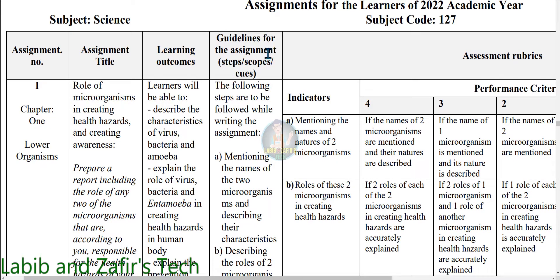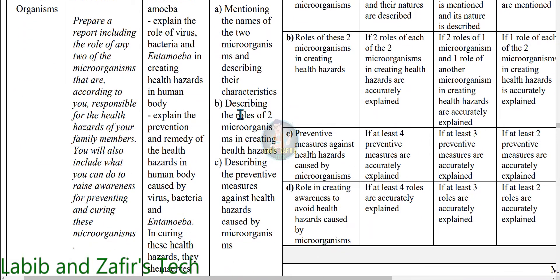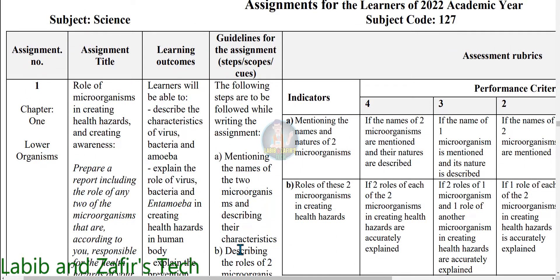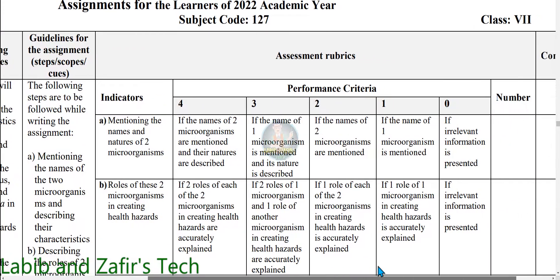Now we will go through the guidelines for the assessment. The following steps are to be followed while writing the assignment. Part A: Mentioning the names of two microorganisms and describing their characteristics. Part B: Describing the roles of two microorganisms in creating health hazards. Part C: Describing the preventive measures against health hazards caused by microorganisms. Now we will go through the assessment rubrics.